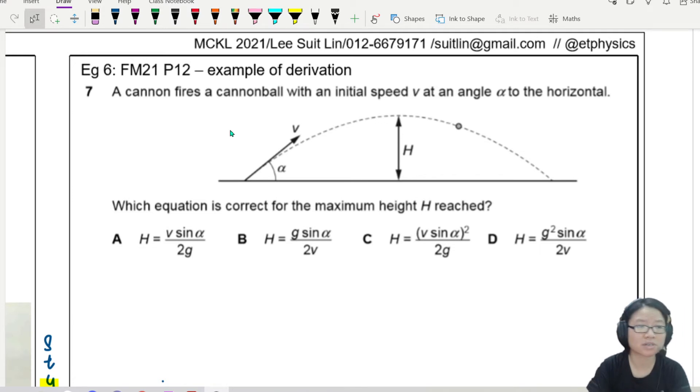But let's look at this question first. A cannon fires a cannonball with the initial speed of v, so v is like that, and an angle of alpha to the horizontal. Which equation is correct for the maximum height reached? So in this question, I want to find the maximum height reached.